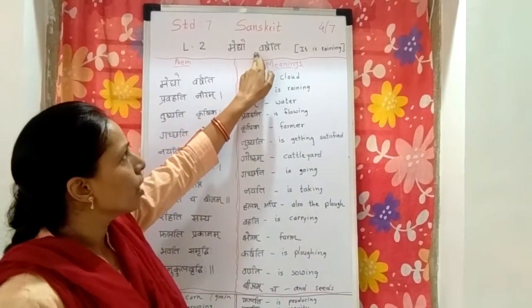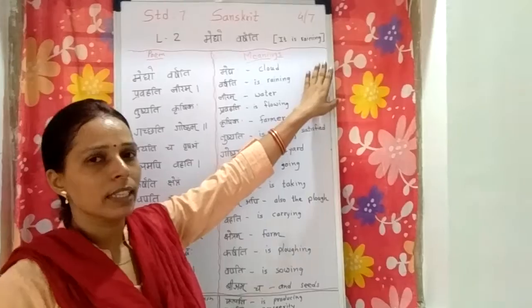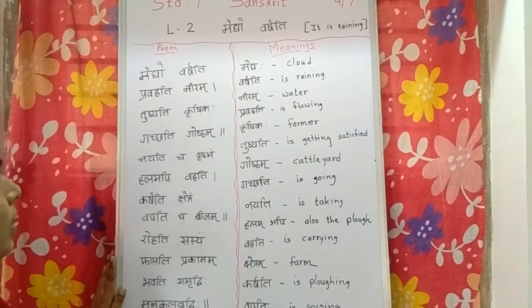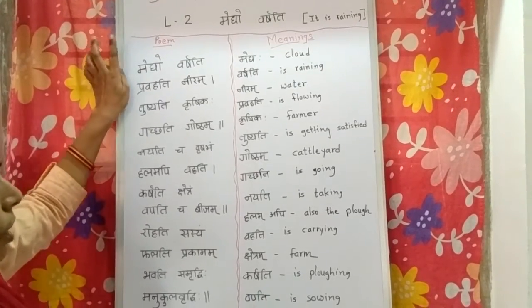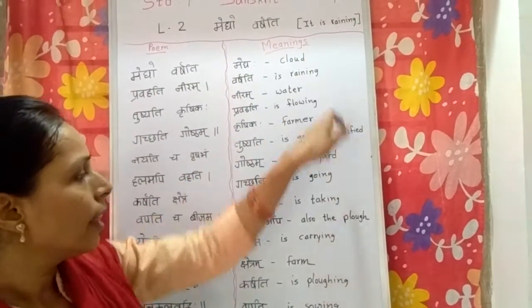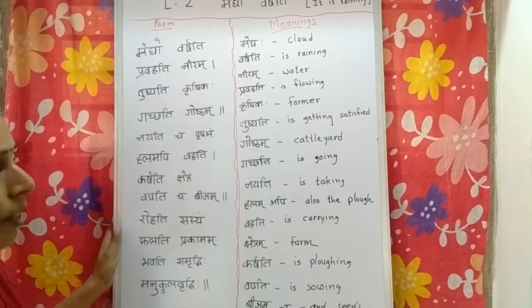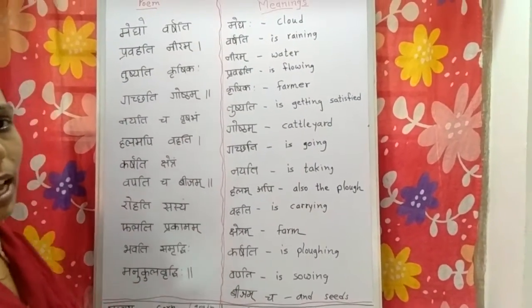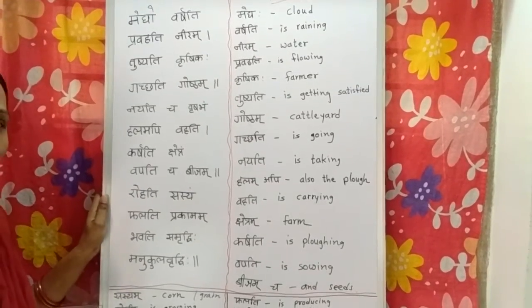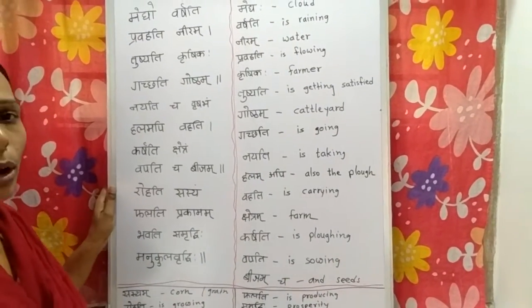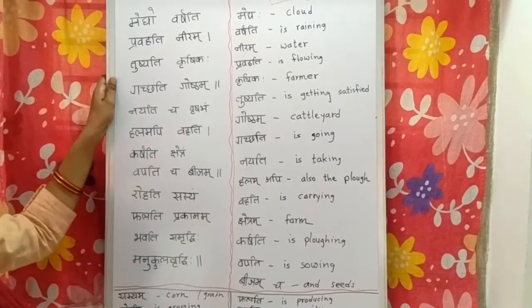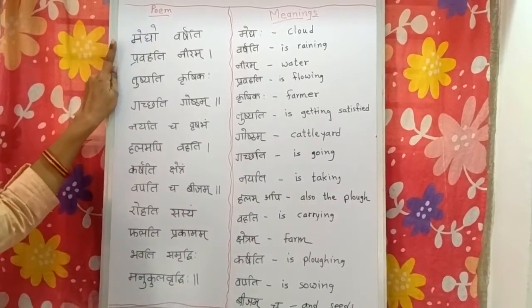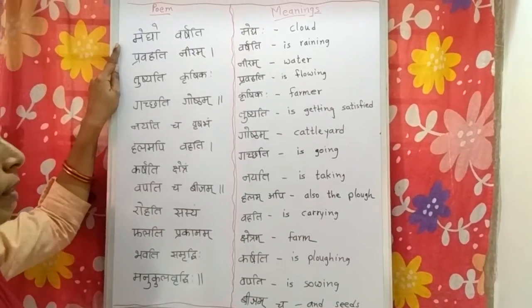Now, Megho Varshti — Megho Varshti means it is raining. Here the poem is written, Megho Varshti, and on this side their meanings are written. First of all I will explain the poem with their meanings and you have to listen carefully. If you have a book of Sanskrit, you can open it and look at it. Now let's start the poem — I will read it first, so listen carefully.